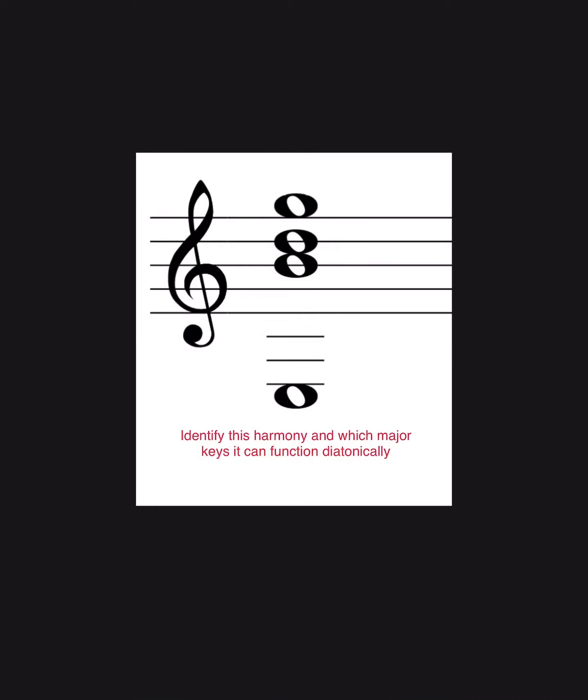Okay, we're being given the task of identifying this harmony and which major keys it can function diatonically. A few things going on here, so let's get into it. We are in treble clef, so the second to the bottom line is a G. If you count up and down using your musical alphabet, you're going to learn that the notes from low to high are E, B, D, and then G on top.